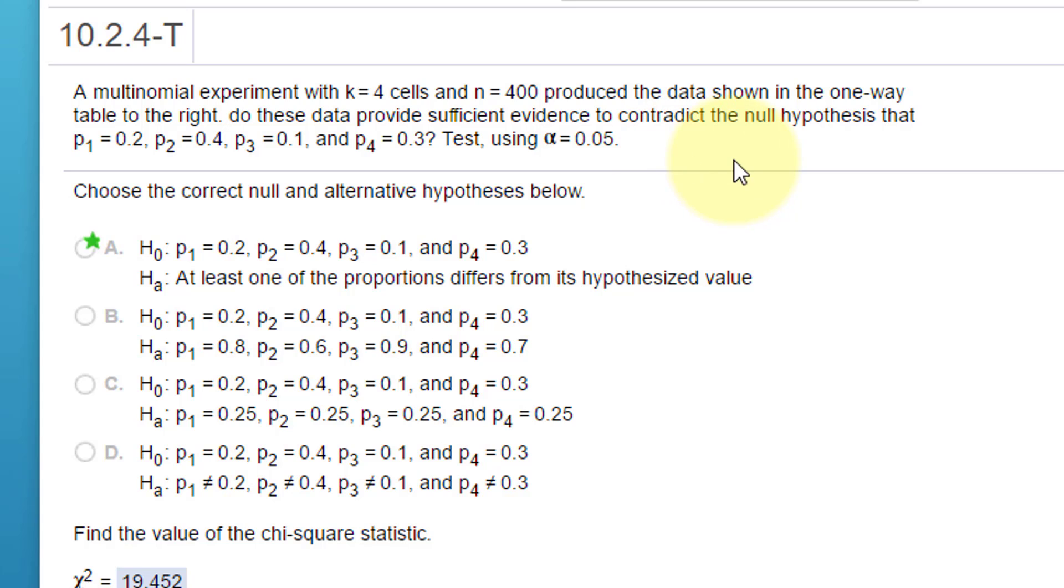They want us to show is there sufficient evidence to contradict the null hypothesis that p₁=0.2, p₂=0.4, p₃=0.1, and p₄=0.3 with α=0.05. And the first question is choose the null and alternative.